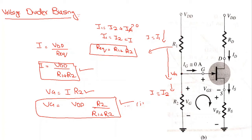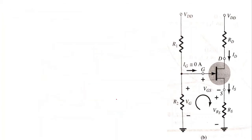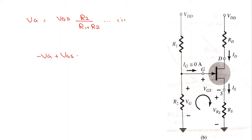Now let me apply KVL to the gate-source branch. Vg is a rise, so I label it as minus. Vgs is a drop, going from positive to negative, so it is plus Vgs. And Vrs is also a drop, so we have: minus Vg plus Vgs plus Vrs is equal to 0.